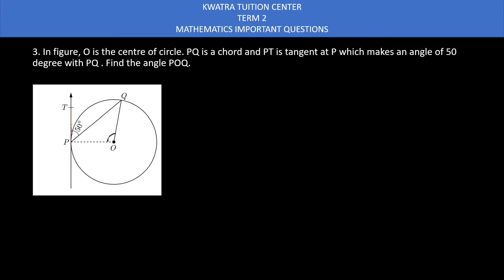TP is a tangent, this is radius, so this will form 90 degree. The angle between tangent and radius is equal to 90 degree. So basically my angle TPO is 90, but I can see that it is divided into two parts which is TPQ plus QPO.